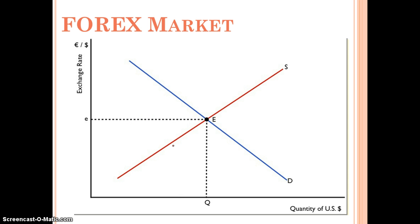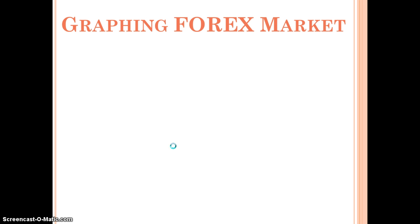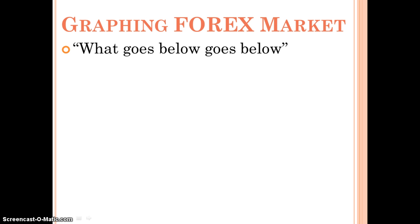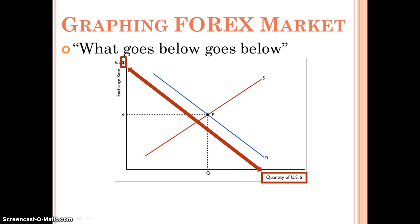When graphing the foreign exchange market — especially for AP exam questions — you must get the correct label for the vertical axis, which means getting the exchange rate ratio right. The general rule is: what goes below goes below. Whatever currency is on the horizontal axis — in this case the U.S. dollar — goes on the bottom of the exchange rate ratio. So the exchange rate label is the foreign currency over dollars, with the market's own currency in the denominator.